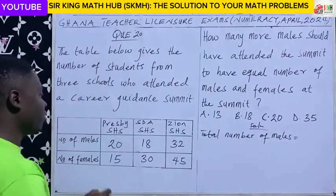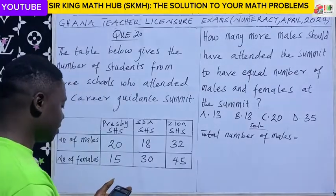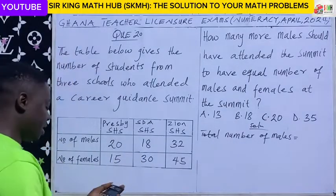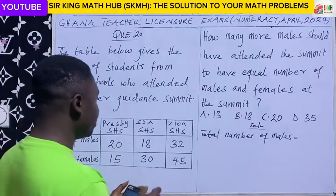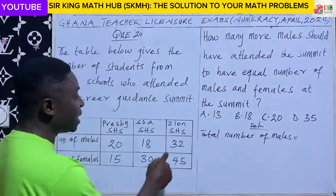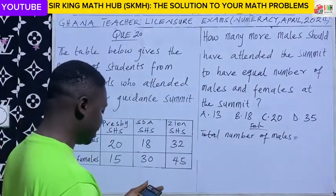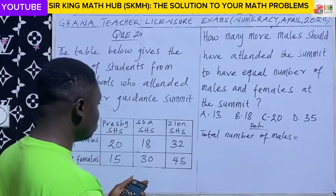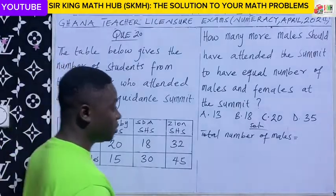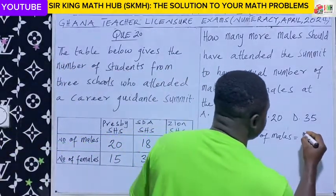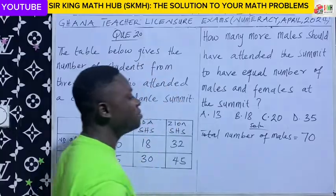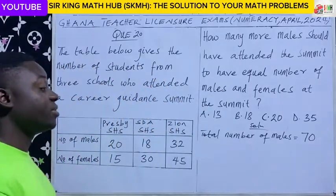From Presby SHS there were 20 males, plus 18 males from SDSHS, plus 32 males from Zion SHS. So we have 70 males present at the summit.